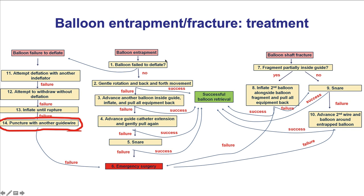Starting with failure for the balloon to deflate, there are different things that can be done. For example, try a different endoflator — try one filled with only saline without any contrast, which is less viscous and potentially easier to withdraw. Sometimes, if it's a small balloon, it can potentially be withdrawn without full deflation, but that is not an option if the balloon is large.